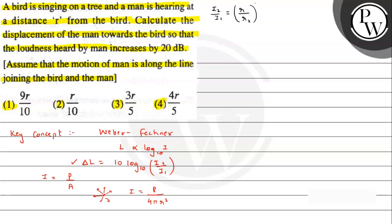From this, we can write I2/I1 as r1²/r2². Therefore, delta L can be written as: delta L = 10 × log base 10 of (r/r2)². Using the log power property, this becomes: delta L = 20 × log base 10 of (r/r2).